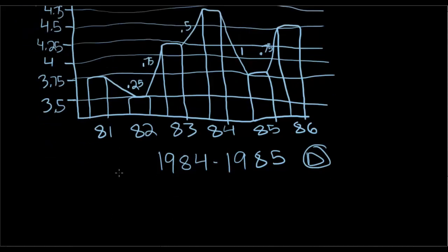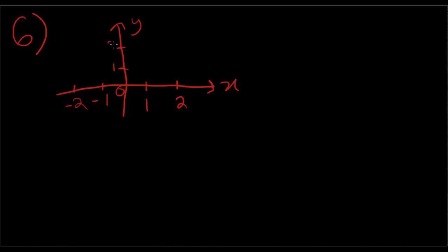So moving on to number 6, which is a graph. So we're just going to draw this quickly here. This is the y-axis. This is the x-axis, so 1, 2, negative 1, negative 2, origin. So this starts somewhere here, goes down to here, and then rises up, and continues on.